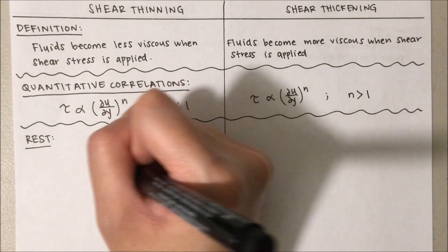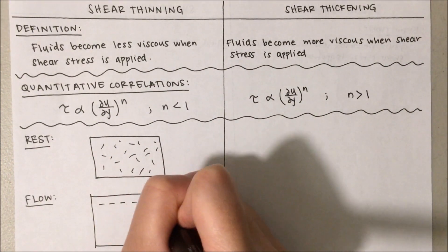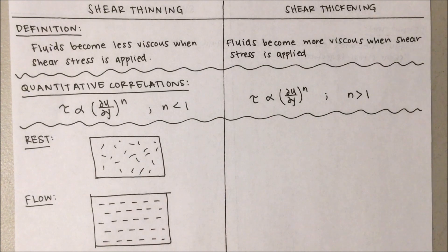For shear thinning fluids, the particles are randomly scattered when at rest, and once they start to flow, the particles would disorder themselves in a more uniform way, which results in reduced amount of intermolecular interaction.